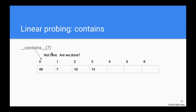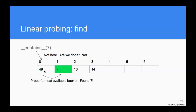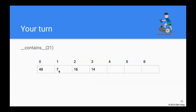To find number 7: 7 hashes to bucket 0, but that contains 49, so it's not 7. We move on to the next bucket and we find it contains 7 — so we've found it.